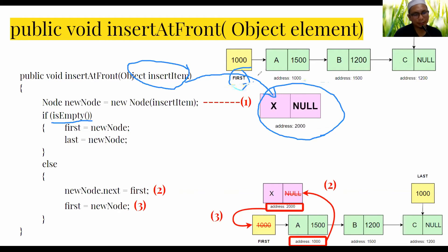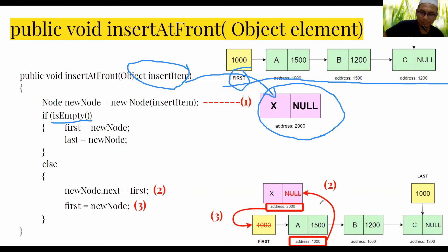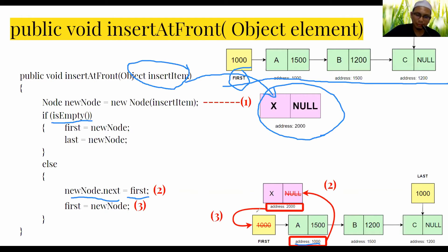If the list is not empty, we get the address stored in first — for example 1000 — and assign it to the next of the new node. Currently the new node's next is null, so we replace it with the address of the first node. Then we copy the new node's address into first, making the new node the new first node.